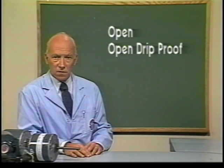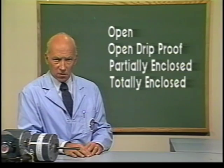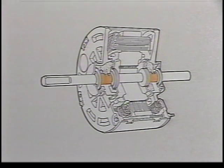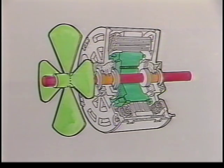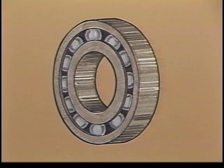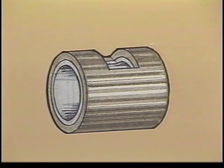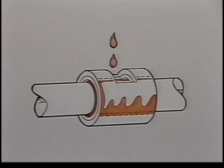To sum up, there are four common types of enclosures: open, open drip proof, partially enclosed, and totally enclosed. Now let's review motor bearings. Bearings are used to support the shaft of the motor and allow it to turn freely while supporting the weight of the rotor and the driven device. There are two principal types: ball and sleeve. Ball bearings consist of hardened steel balls retained by races and can handle heavy-duty loads. Sleeve bearings, which are far more common, are both quieter and less expensive. The oil on the bearing forms a hydrodynamic film which eliminates metal-to-metal contact and greatly reduces friction.